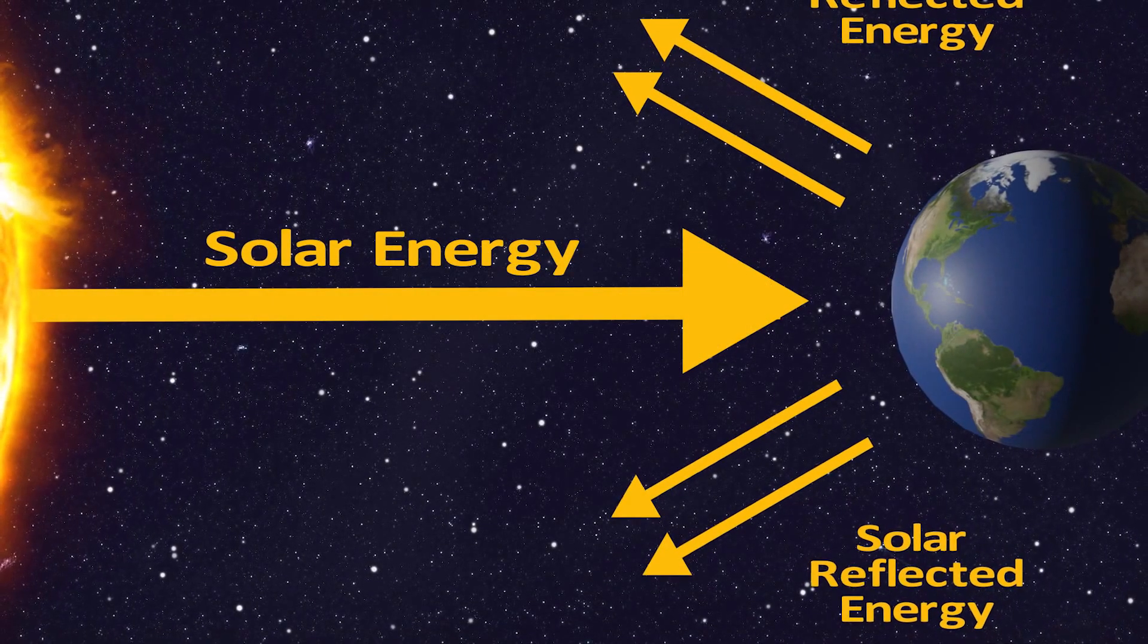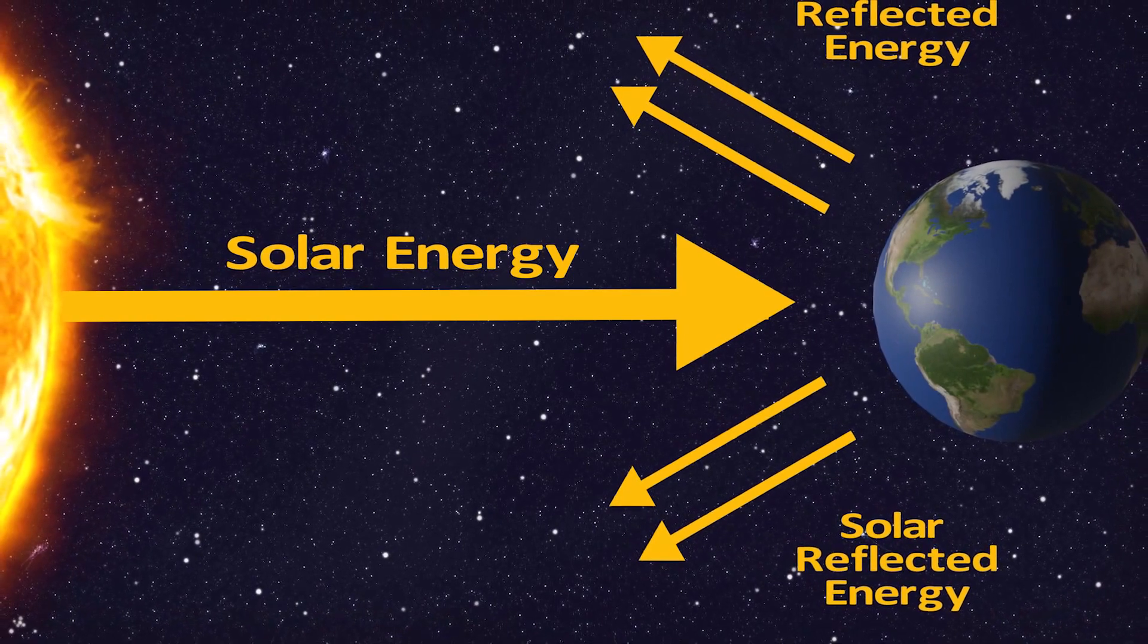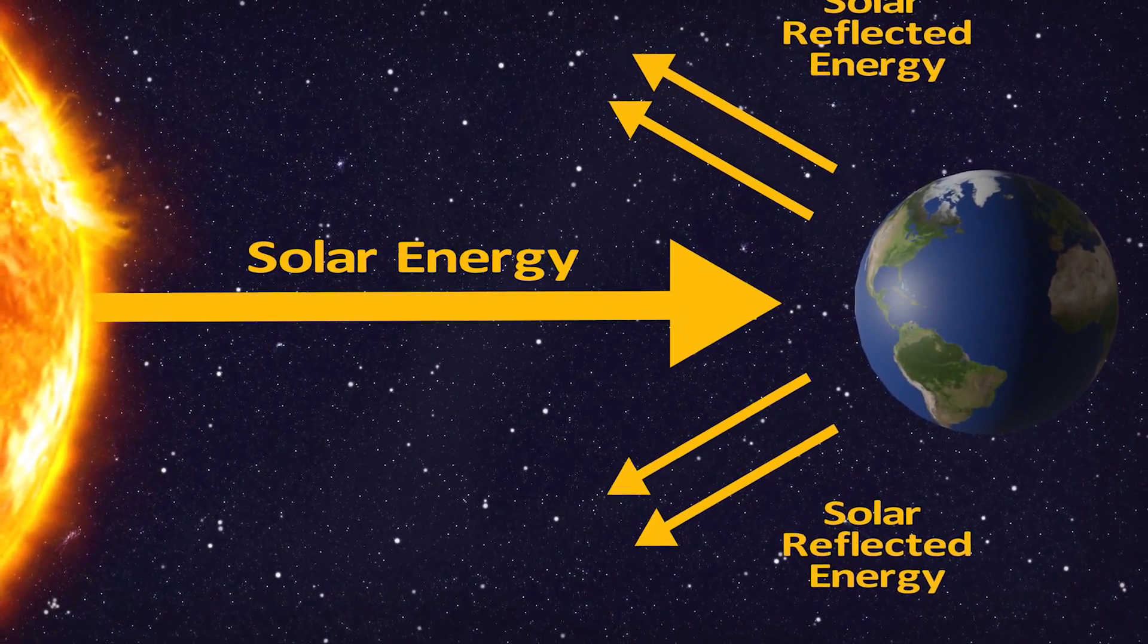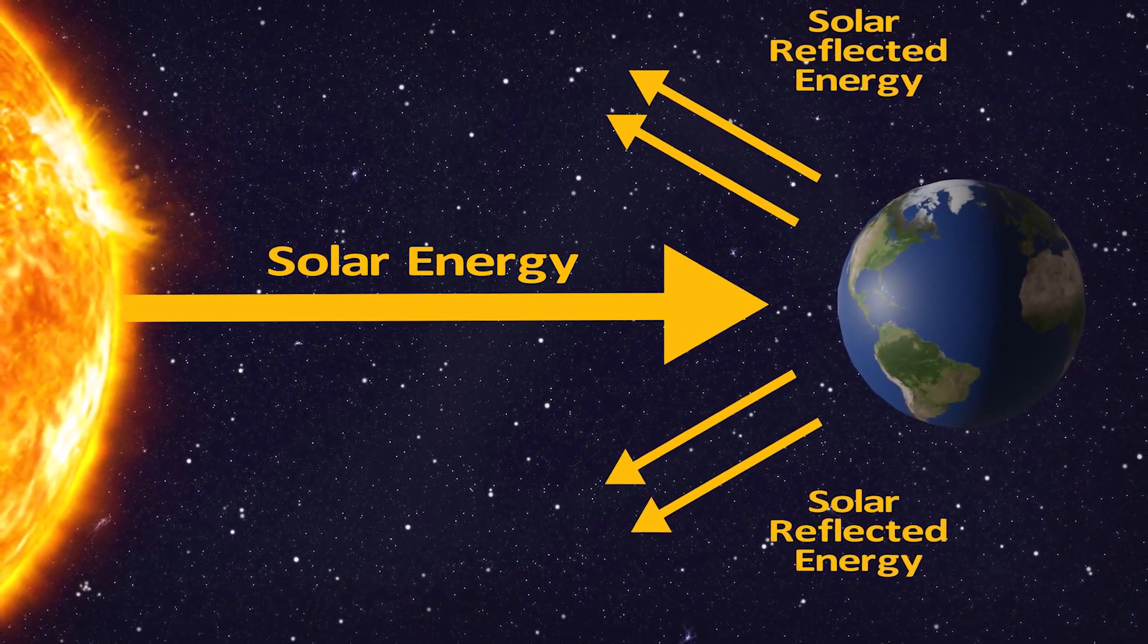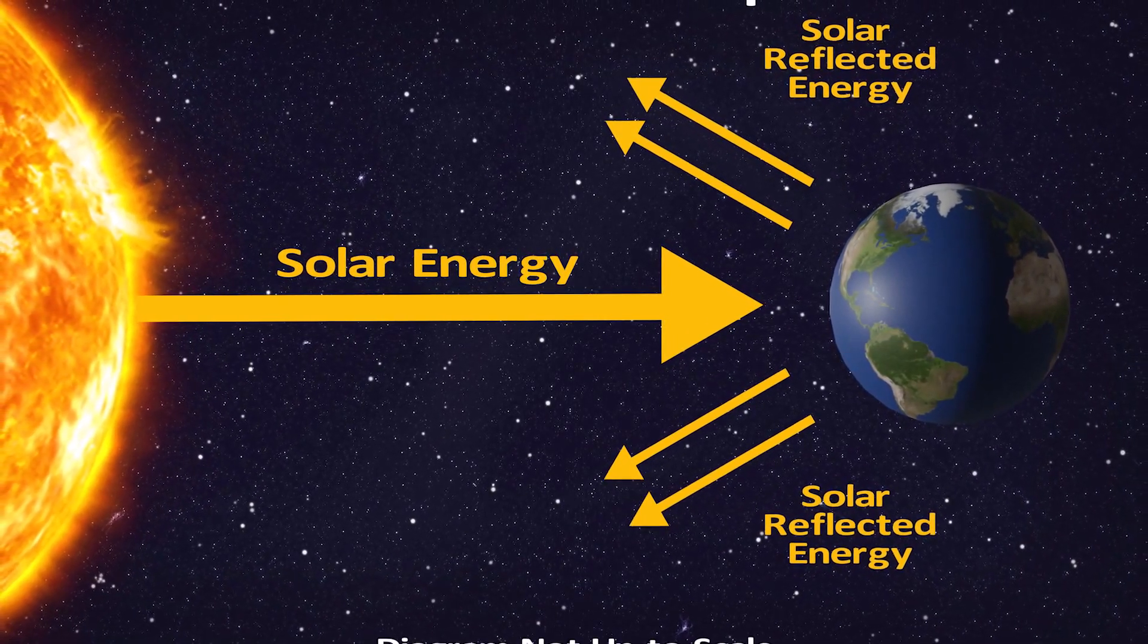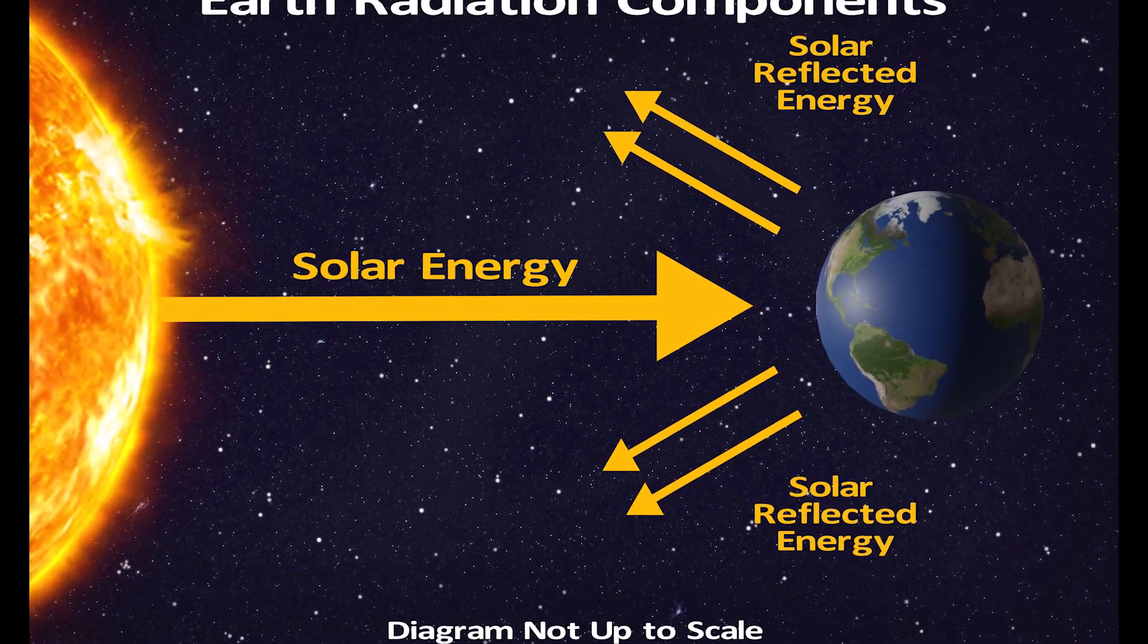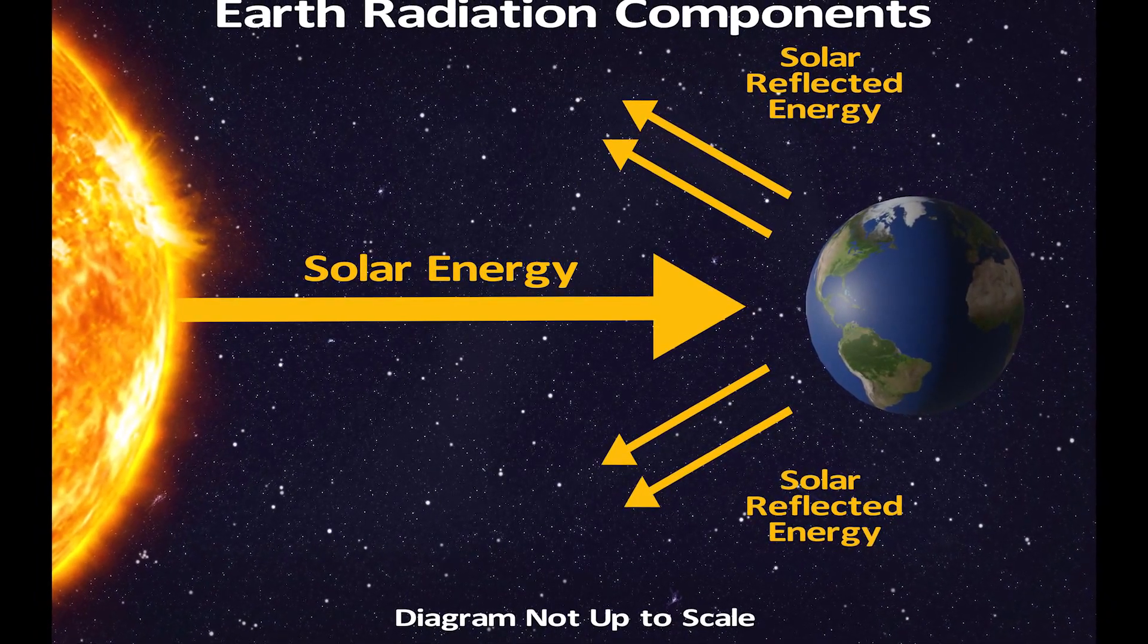The angle of refraction of the sun's frequencies. The outer edge of the atmosphere has an effect of refracting or reflecting the solar rays at different angles and different areas of the curvature. It is a glass bubble effect created at the outer edge of the atmosphere that causes refraction and deflection of some of the sun's frequencies.